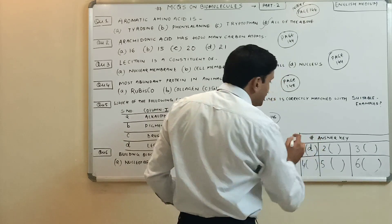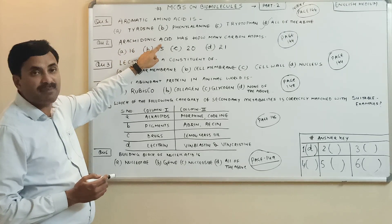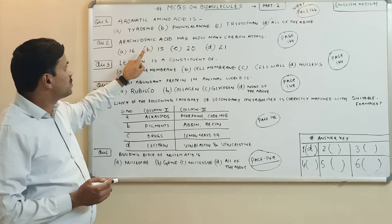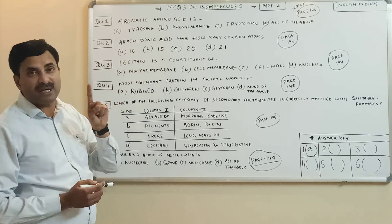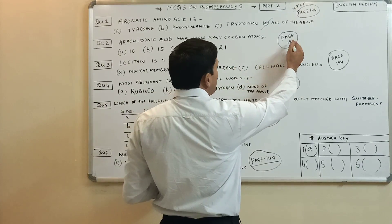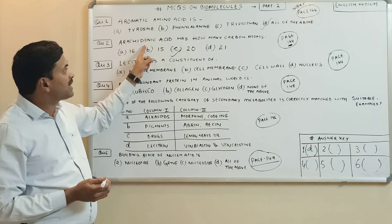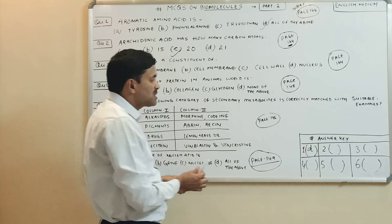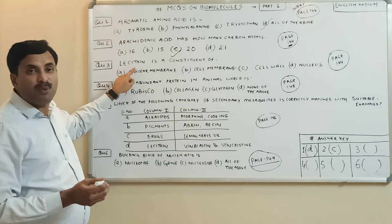The second question is: arachidonic acid has how many carbon atoms? You must know that arachidonic acid has 20 carbon atoms. If you view page number 144 of NCERT, it is clearly written that arachidonic acid has 20 carbon atoms. So the answer to question number two is option C.